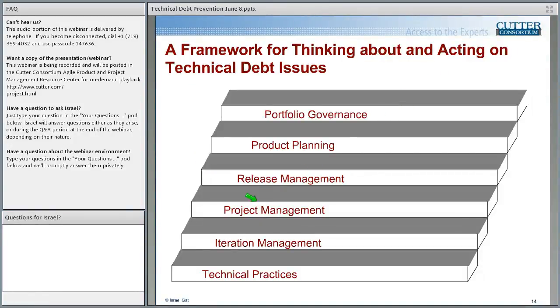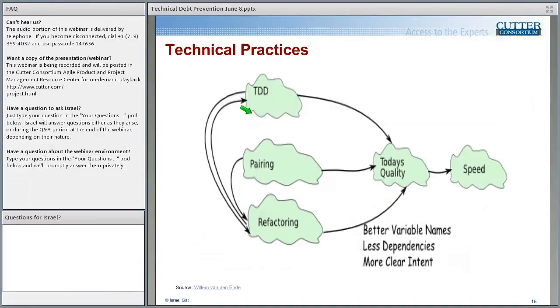And the Cutter framework has six aspects to it. Starting at the very bottom with technical practices and going all the way up to portfolio governance. And as I mentioned earlier, you need to do all six in order to effectively rein in your technical debt.